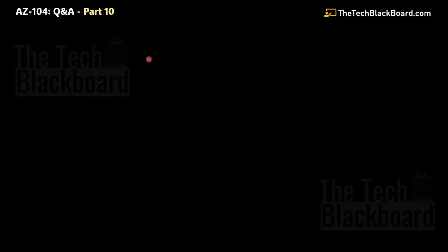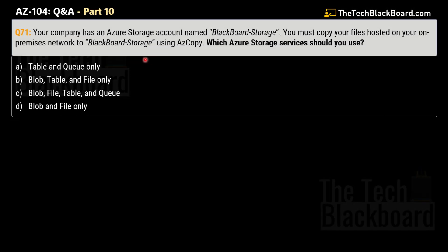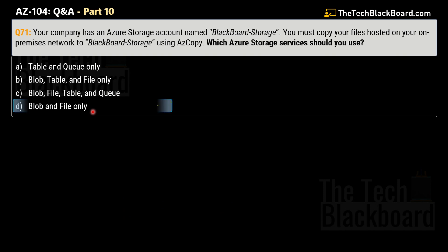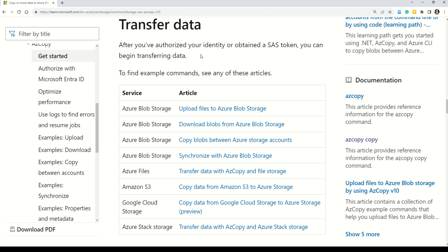Question number 71: Your company has an Azure storage account named Blackboard Storage. You must copy files hosted on your on-premises network to Blackboard Storage using AZ Copy. Which Azure storage services should you use? Options are: A) Table and Queue only, B) Blob, Table, and File only, C) Blob, File, Table, and Queue, D) Blob and File only. The correct answer is option D: Blob and File only.